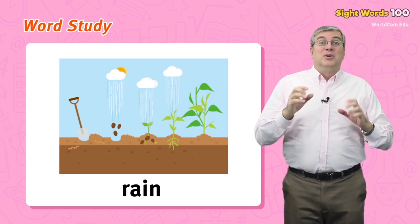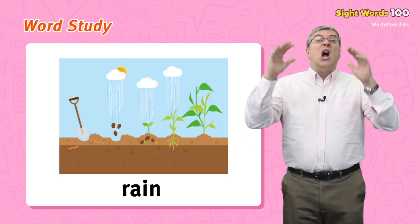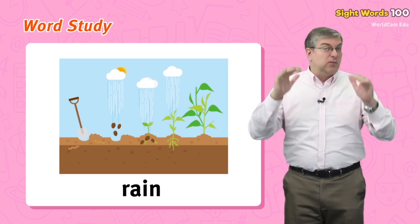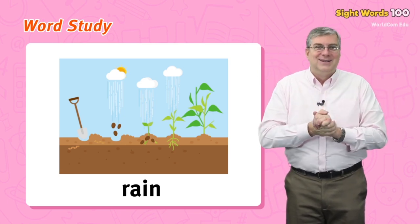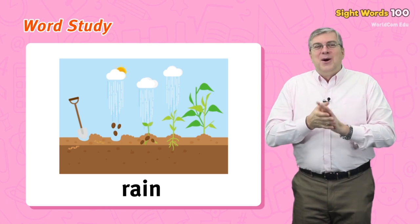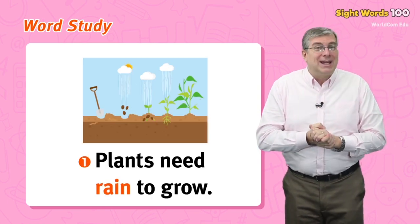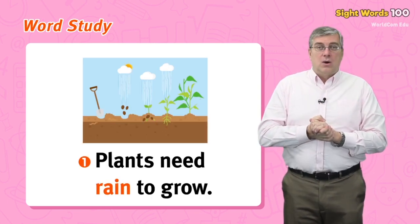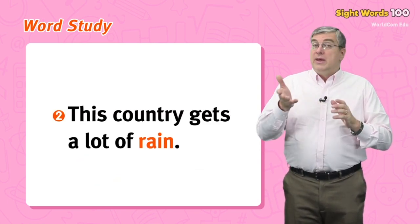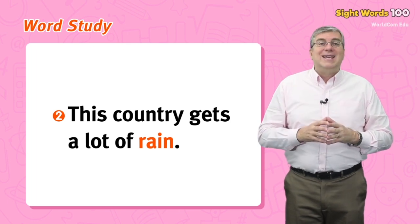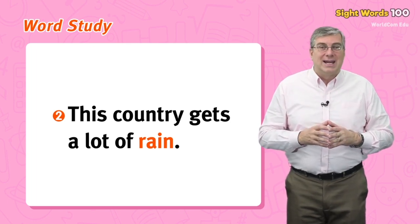First, rain. Rain is water that falls from the sky. Sometimes it's just a little water, but sometimes it's really a lot. Plants need rain to grow, or this country gets a lot of rain.